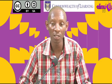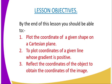On to the lesson objectives. By the end of this lesson you should be able to: number one, plot the coordinates of a given shape on a Cartesian plane; number two, plot the coordinates of a given line whose gradient is positive; and number three, reflect the coordinates of the object to obtain the coordinates of the image.